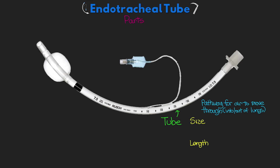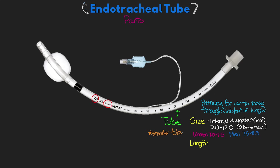The size of an ET tube refers to the internal diameter of the tube in millimeters, and it usually states both the internal and external diameter on the tube. Sizes range from 2.0 up to 12.0 in 0.5 millimeter increments. The size selected is primarily based on the size of the patient as well as potential need for bronchoscopy — typically a 7.5 or 8.0 tube is needed to pass a bronchoscope through. On average, adult women are usually a 7.0 or 7.5, and men range from 7.5 to 8.5. Remember that the smaller the tube, the more resistance there is to airflow, which is particularly important for patients spontaneously breathing prior to extubation.